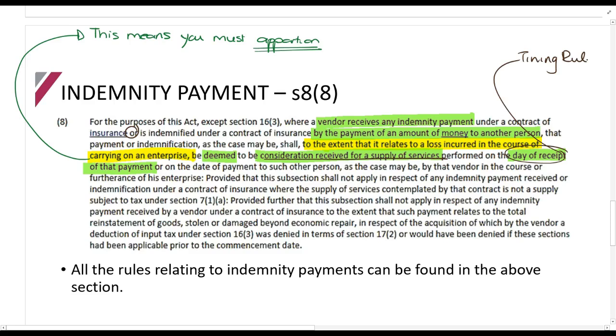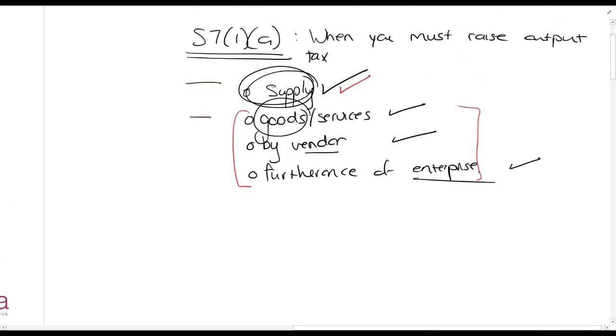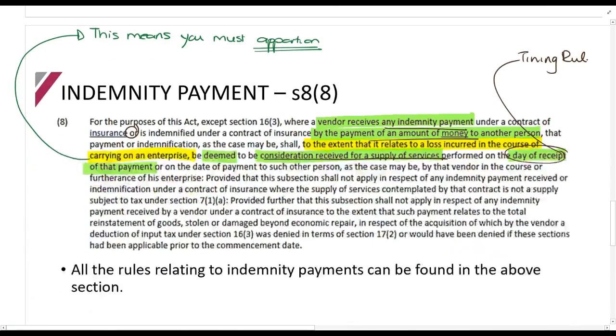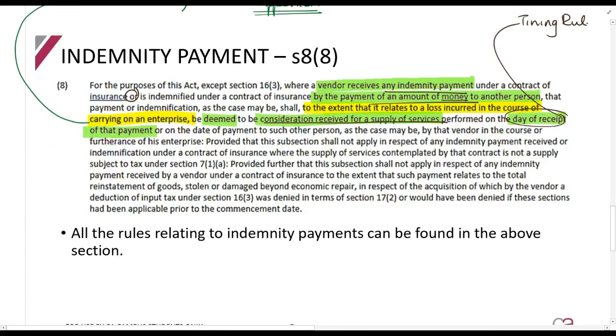Just up to there, it tells you, if you receive money or your insurance pays someone else, you are treated as if you supplied services. If you have supplied services, guys, if there is a supply of goods or services by a vendor in the furtherance of his enterprise, then you must raise output tax. So that is why you will have to raise output tax.